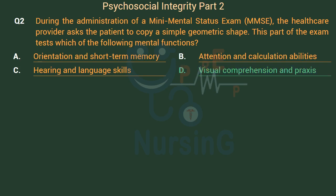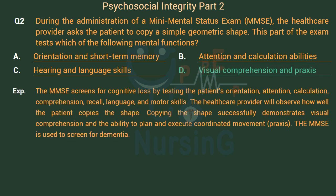The right answer is Option D: Visual Comprehension and Praxis. The MMSE screens for cognitive loss by testing the patient's orientation, attention, calculation, comprehension, recall, language, and motor skills. The healthcare provider will observe how well the patient copies the shape. Copying the shape successfully demonstrates visual comprehension and the ability to plan and execute coordinated movement — praxis. The MMSE is used to screen for dementia.